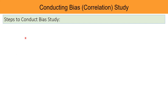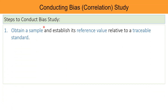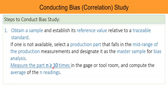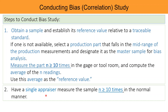Steps to conduct a bias study: Obtain a sample and establish its reference value relative to a traceable standard. If one is not available, select a production part that falls in the mid-range of production measurements and designate it as the master sample for bias analysis. Measure the part more than 10 times in the gauge or tool room and compute the average of the n readings. Use this average value as the reference value. Then have a single appraiser measure the sample more than 10 times in the normal manner.